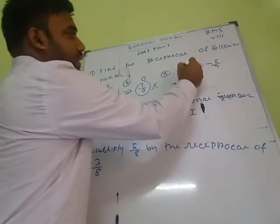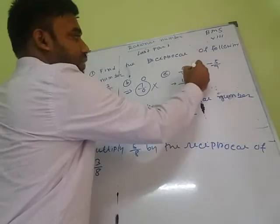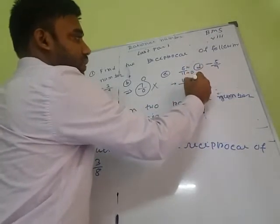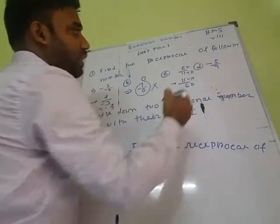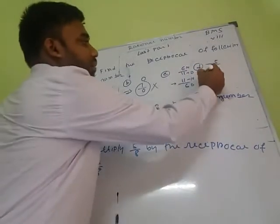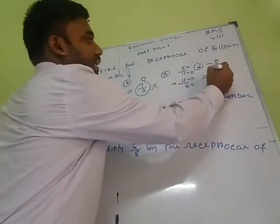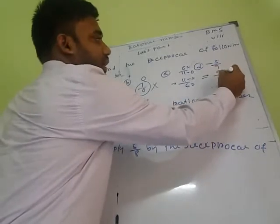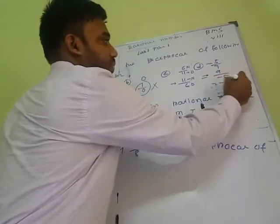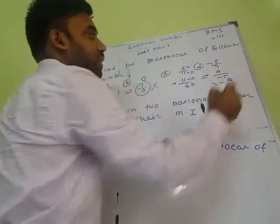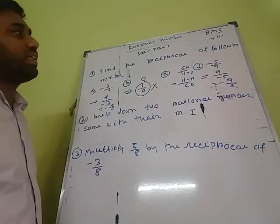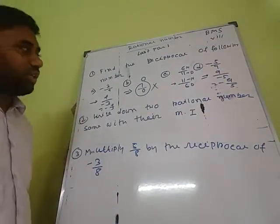Here, 6 is the numerator and 11 is the denominator. To find the reciprocal, just swap the numerator and denominator. Next: minus 5 by 9. Its reciprocal is 9 by minus 5, which equals minus 9 by 5. So minus 9 by 5 is the reciprocal of minus 5 by 9.